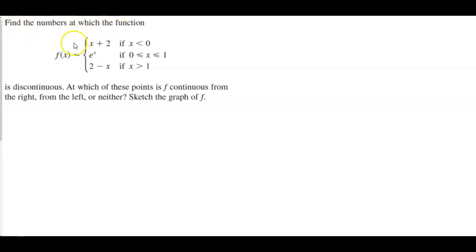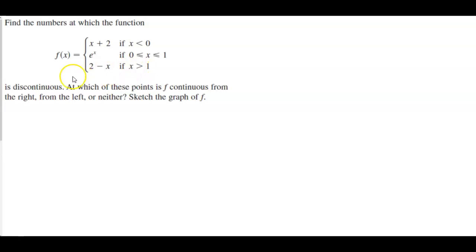Find the numbers at which the function f of x is discontinuous, where f of x equals x plus 2 if x is less than 0, e to the x if x is between 0 and 1 inclusive, and 2 minus x if x is greater than 1. At which of these points is f continuous from the right, from the left, or neither? Then sketch the graph of f.